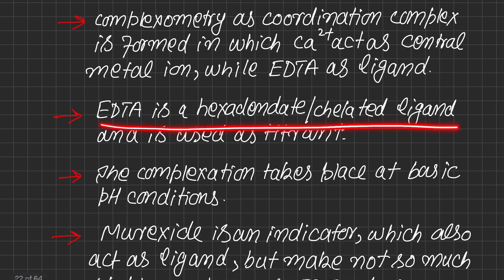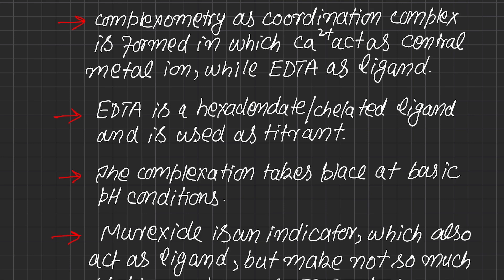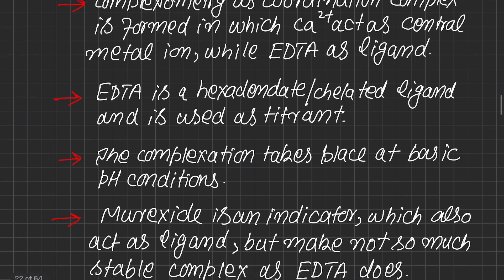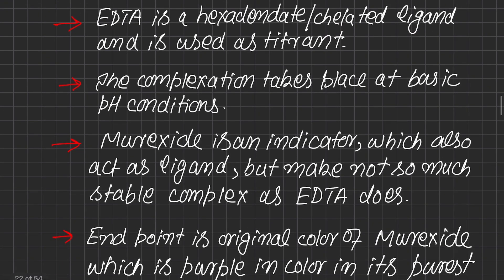EDTA is a hexadentate chelated ligand. Hexadentate means it donates six electron pairs at one time towards the central metal atom or ion. It is also a chelated ligand because it makes a stable ring formation with the central metal atom or ion. That is why this complex is also called a chelated complex.